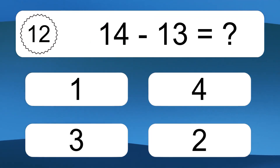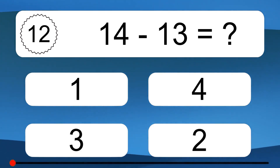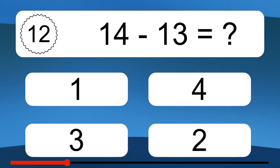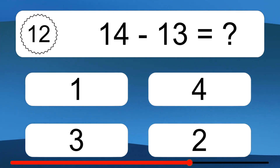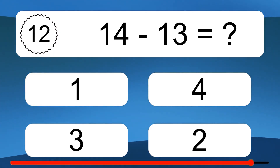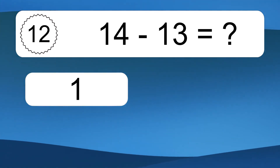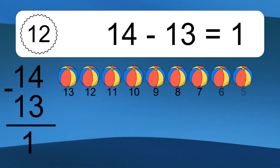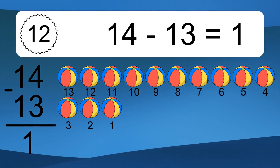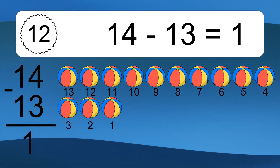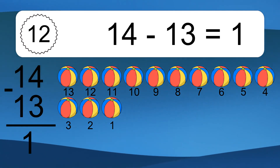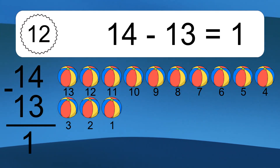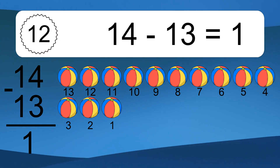14 minus 13 equals what? 14 minus 13 equals 1. Let's count it: 13, 12, 11, 10, 9, 8, 7, 6, 5, 4, 3, 2, 1.